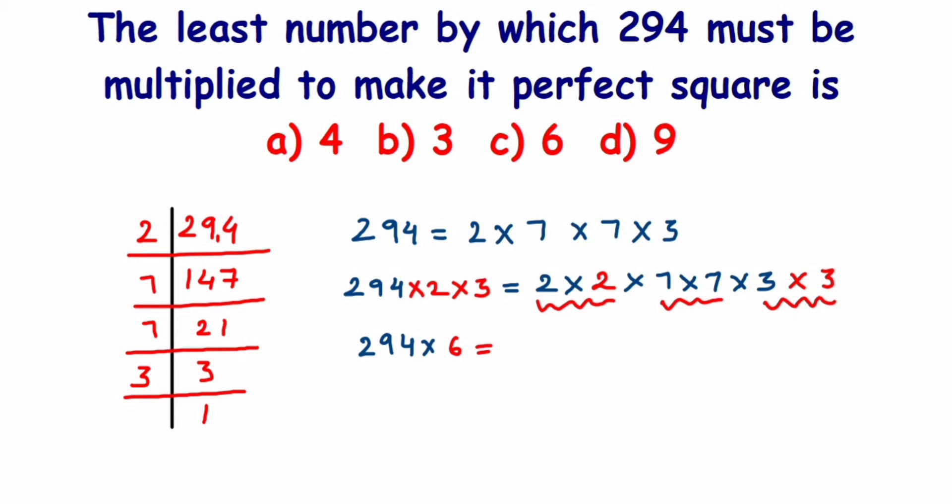I'm writing 2 into 2, this is one pair. 7 into 7, this is one pair, and I have 3 into 3, this is one more pair. We don't want to solve 294 times 6 further because they've not asked - they just only asked what is the least number. If I look at the options, the answer will be 6 because we're multiplying with 6 here.